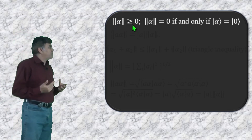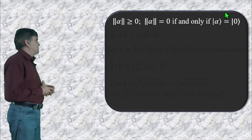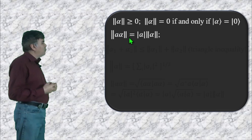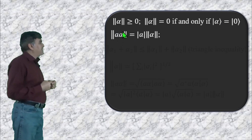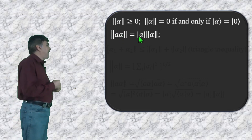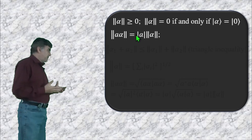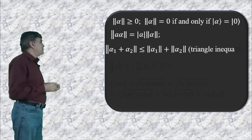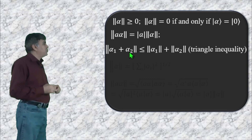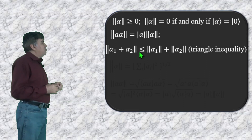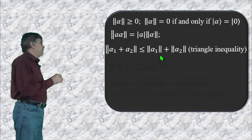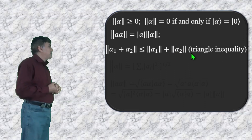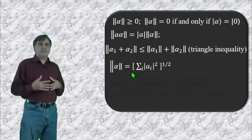The norm satisfies the following properties: the norm of alpha is always greater than or equal to zero, and it equals zero only if alpha is the null vector. If a is a complex number then a·alpha is another element of the same Hilbert space, and the norm of a·alpha equals the modulus of a times the norm of alpha. If ket alpha_1 and ket alpha_2 are two vectors in the Hilbert space, then the norm of their sum is always less than or equal to the sum of the individual norms — this is the triangle inequality.